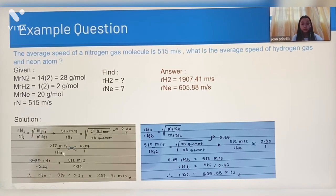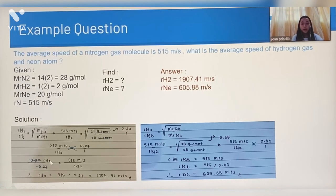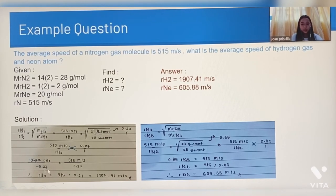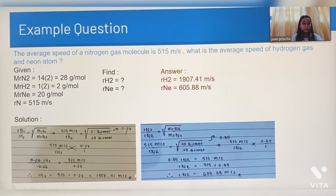We cross-multiply, getting 0.27 R(H2) equals 515 m/s. To find R(H2), we divide both sides by 0.27, so R(H2) equals 515 divided by 0.27, which is 1,907.41 meters per second.